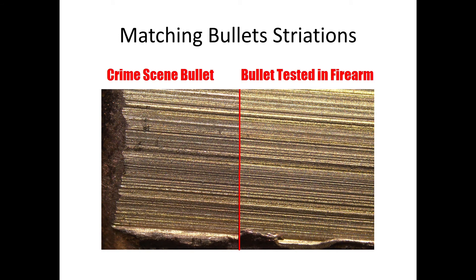This shows the striations of two bullets that match. In crime labs they have a comparison microscope with two eyepieces, each pointing to a different bullet. You twist and turn the bullets until you get a matching of the striation patterns. Every time you shoot that gun, you're going to get that same pattern. It can be tedious to match them up, but as you can see, these two bullets match.